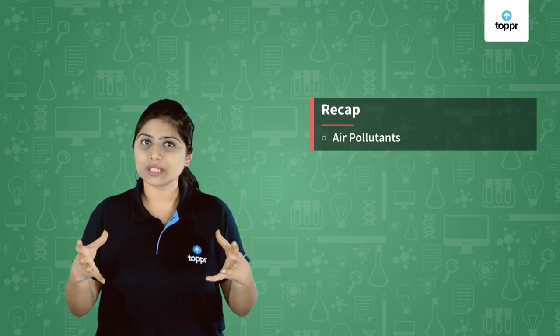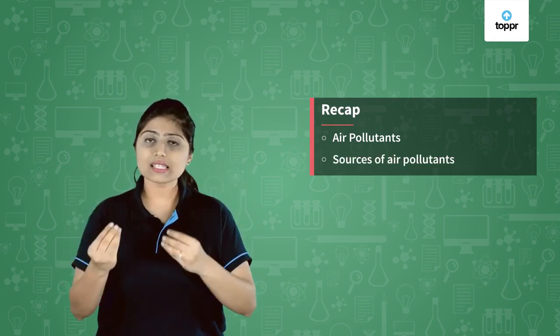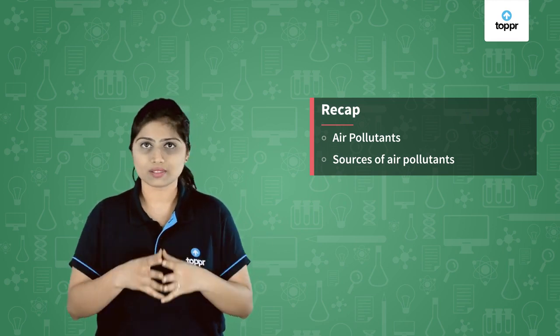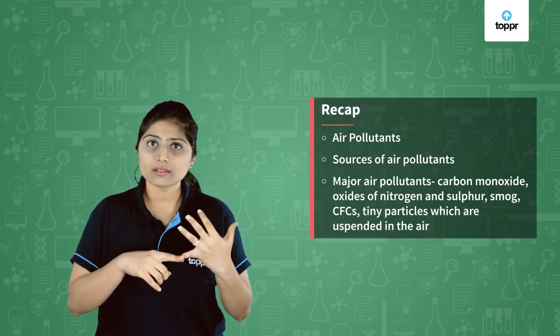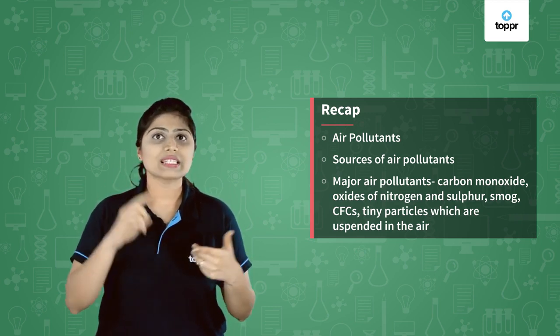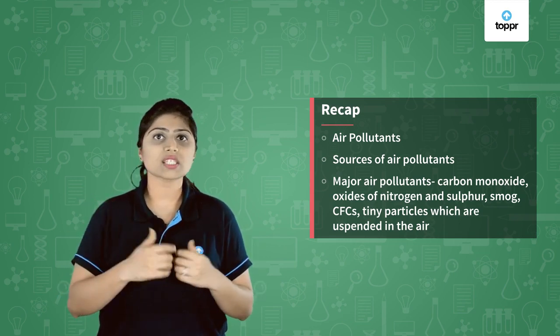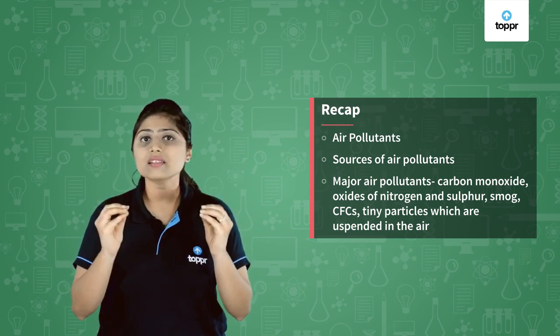To summarize, air pollutants are substances that contaminate the air. They can come from natural sources or be emitted by human activities. The major air pollutants we studied are carbon monoxide, oxides of nitrogen and sulfur, smog, CFCs, and tiny suspended particles. We've also seen how these pollutants can be hazardous for our health.